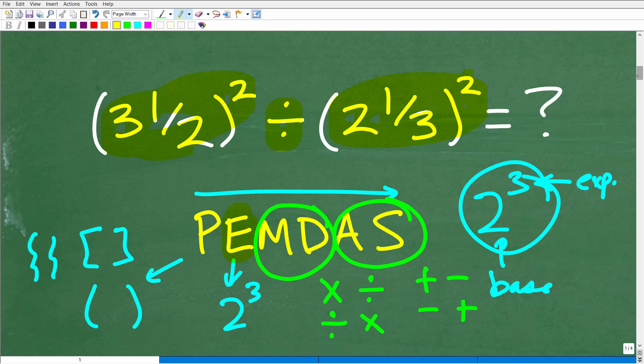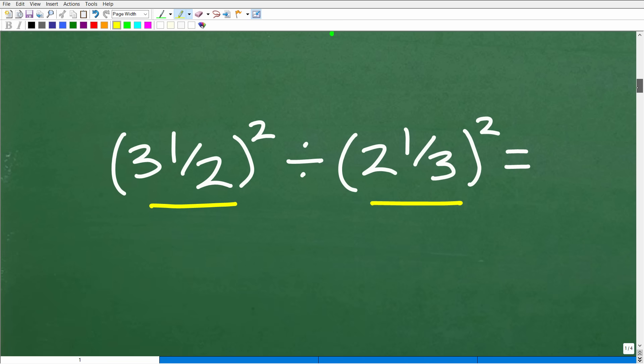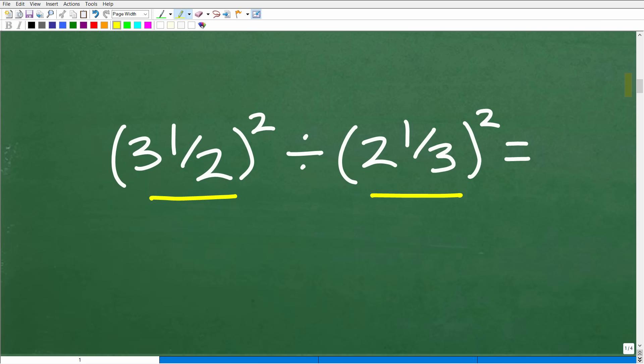Remember, we're not using a calculator to solve this problem other than the one in between our ears. So as we discussed with the order of operations, I'm focused on taking care of these powers. What's inside parentheses—there's really nothing to do, no number operations here. But I'm going to have to be thinking about, I've got to take 3 and 1/2, square that, and 2 and 1/3, and square this.